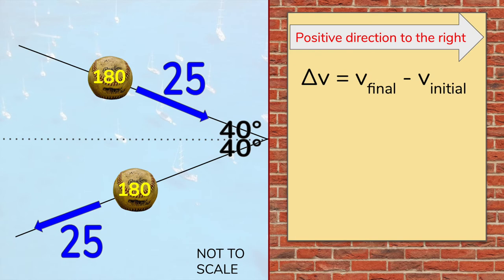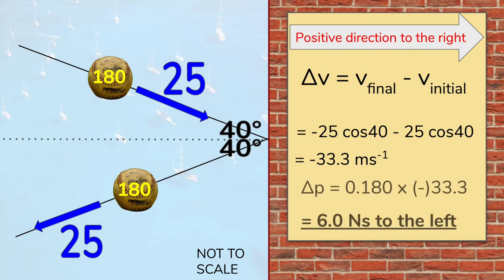The positive direction is to the right, and to find a change we always subtract the initial quantity from the final quantity. Because we chose the right hand direction as positive, the final result is a negative number, minus 33.3. And now we work out the change in momentum, where the mass is 0.180, because we must use kilograms, and the resulting impulse is 6.0 newton seconds.